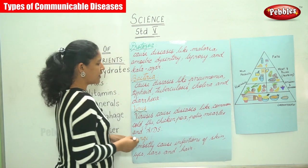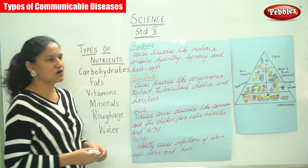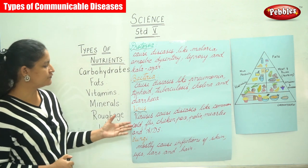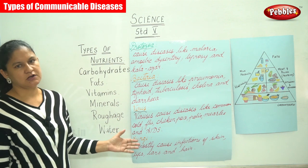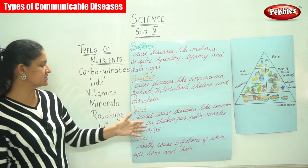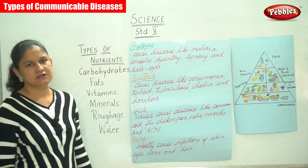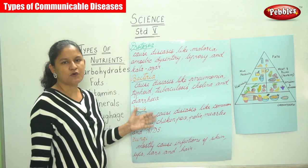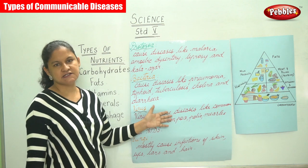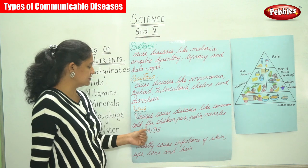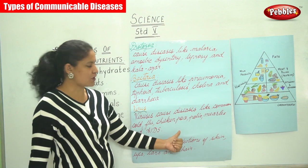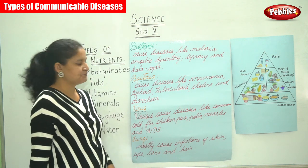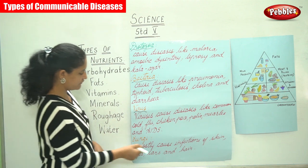The next type of germ is the virus. Viruses cause diseases like common cold, flu, chicken pox, polio, measles, and AIDS.